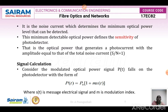The noise current determines the minimum optical power level that can be detected, because we should be able to recover the signal from the noise component. The minimum detectable optical power defines the sensitivity of the photodetector. The optical power that generates a photocurrent with amplitude equal to that of the total noise current — that is, signal-to-noise ratio equal to 1 — defines the sensitivity.